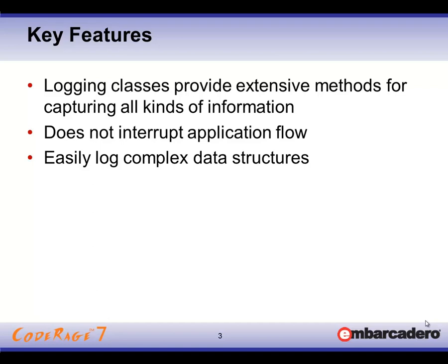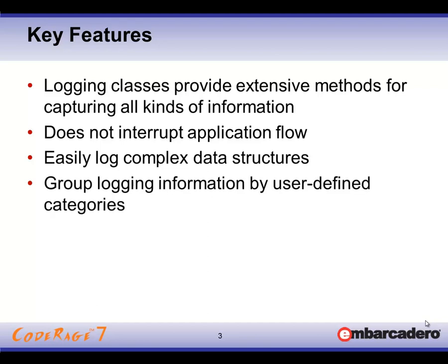It's also very easy to log very complex data structures — from simple native data types all the way to complex objects with properties, and even structs and other types of non-object-related data. One of the really powerful features of CodeSight, which distinguishes it from other logging tools, is a concept called a category. This allows us to group messages together in a user-defined category rather than an arbitrary log level value, and filter using the category we're interested in.